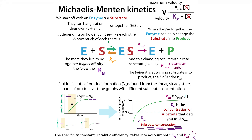Kinetics deals with how fast enzymes work, and these kinetic schemes can get really complicated because you can be dealing with lots of different substrates, all these different steps and conversions. So we often simplify things by thinking in terms of Michaelis-Menten kinetics.